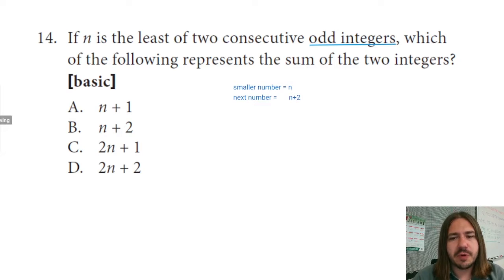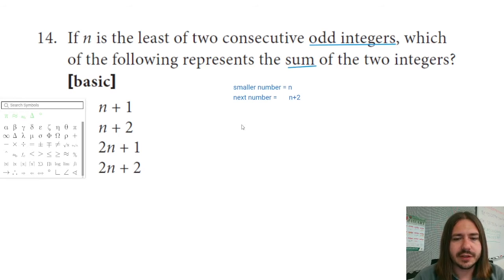So it says which of the following represents the sum of the two integers? Sum indicates that we want to add these two things together. So I have n plus this n plus 2. And when I combine my like terms, which is just the n's, I'm going to get 2n plus 2, and that's our answer.